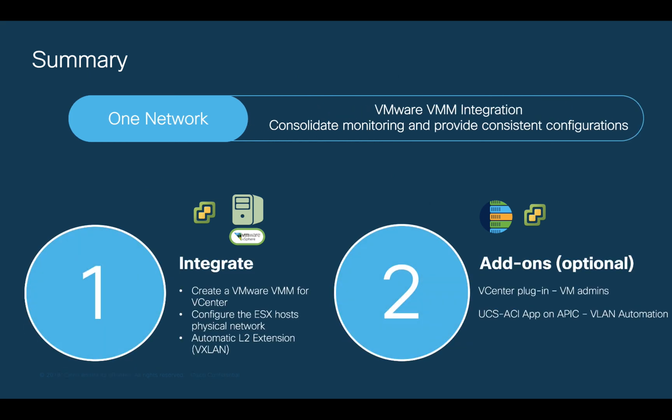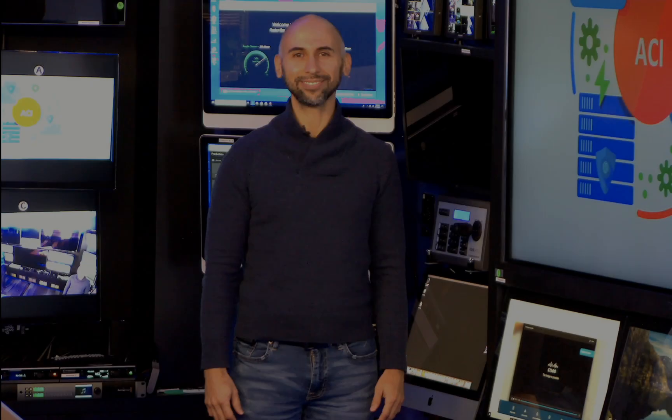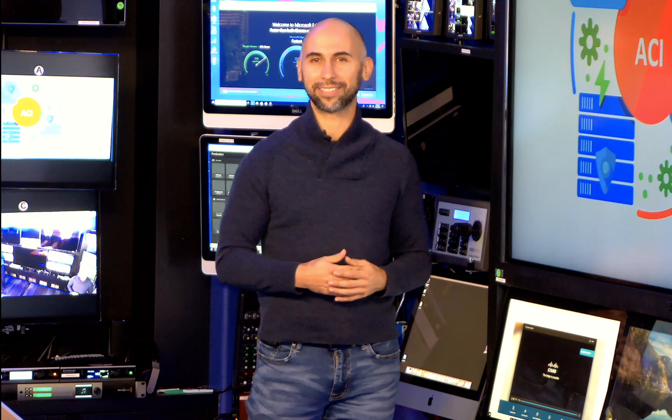As a summary, we learned how to integrate VMware to ACI using VDS, which will help us consolidate monitoring and allow us to provide consistent configurations, especially at the logical network level, which we will cover in Module 3. Remember, ACI provides automated Layer 2 extension between leaves, so you will be able to perform vMotion anywhere over ACI. We also learned that there are some optional add-ons that may be useful to the VM and UCS admin. ACI provides you with a better, simpler, and secure network — any size, anywhere, and on any cloud. If you want to learn more about other common tasks and how ACI radically simplifies network provisioning and operations, please watch the rest of the videos in this series. Thanks for watching.